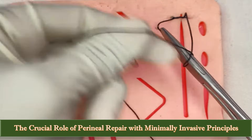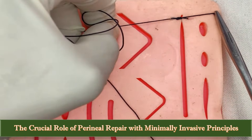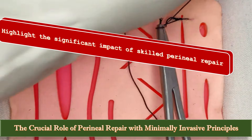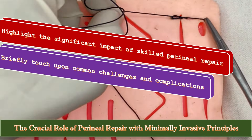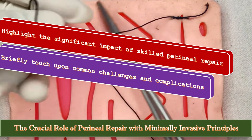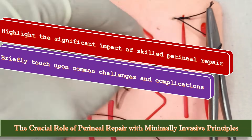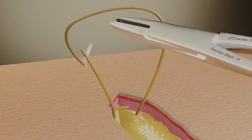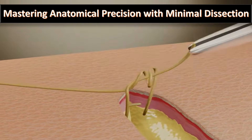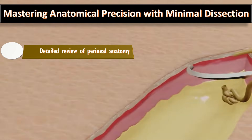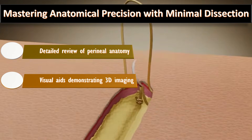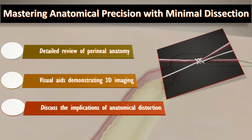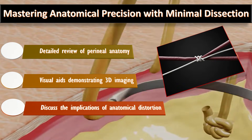The crucial role of perineal repair with minimally invasive principles includes highlighting the significant impact of skilled perineal repair on patient recovery and long-term well-being, while briefly touching on common challenges from inadequate repair. Complex repair within a minimally invasive framework is introduced, supported by a detailed review of perineal anatomy relevant to complex laceration, visual aids demonstrating 3D relationships of muscles and fascia, and discussion of anatomical distortion from previous trauma or scar tissue on repair strategy.